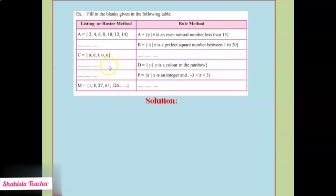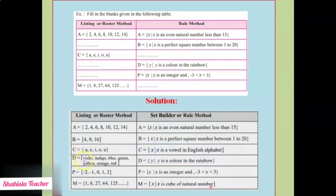Now the fourth question. D = {y such that y is a color in the rainbow}. Students, do you know how many colors are in the rainbow? Yes, exactly — there are 7 colors in the rainbow. So here we will write D = {violet, indigo, blue, green, yellow, orange, red}. We have written it in the listing method.